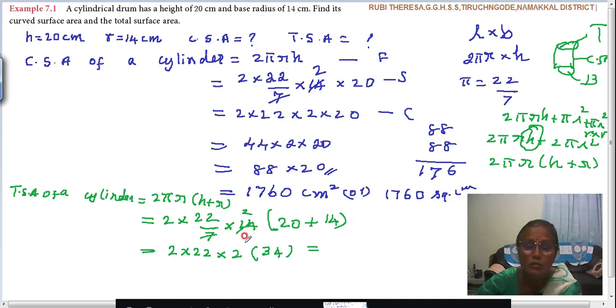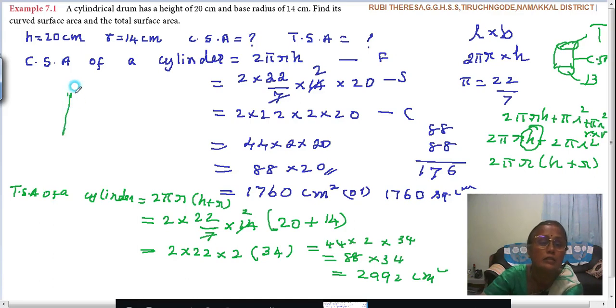So equal to 44 into 2 into 34. That is 88 into 34. Those who are able to multiply it directly, you can give the answer, 2992 centimeter squared. Otherwise, for the low bloomers, just let me do the calculation here. You see, 88, how will you split? 88 into 34.